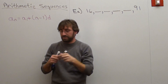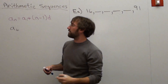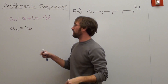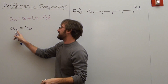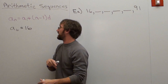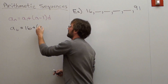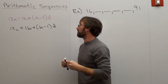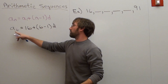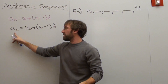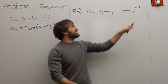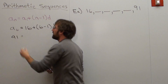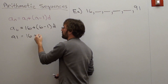So we're going to plug in our a sub 6. Our sixth term equals a sub 1, our first term, which is 16. Now, a sub 6 is the sixth term — it's not a number yet; I'll substitute the number in a second. Plus n, which is 6, minus 1, times d. We still can't solve for d until we say what a sub 6 actually is — our sixth term is 91. So: 91 equals 16 plus (6 minus 1) times d, which gives us 91 equals 16 plus 5d.